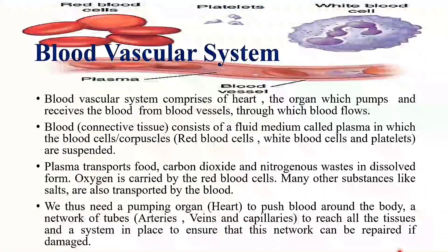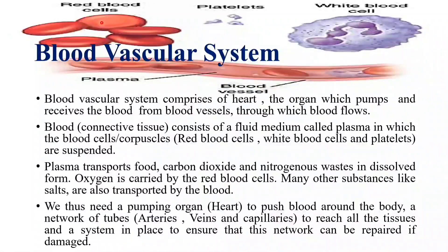The blood vascular system consists of blood, which is the fluid connective tissue, and it consists of three types of cells: RBC, WBC, and platelets. RBCs are biconcave and consist of hemoglobin, which is responsible for carrying oxygen. When oxygen attaches with hemoglobin, it is known as oxyhemoglobin; therefore, hemoglobin is also known as respiratory pigment. White blood cells are responsible for immunity and create the defense mechanism of the body. Platelets are also known as thrombocytes and are responsible for blood clotting.